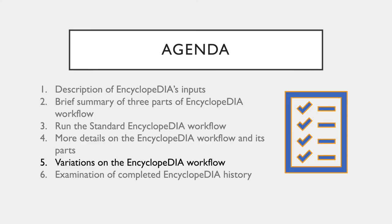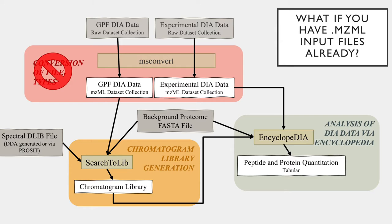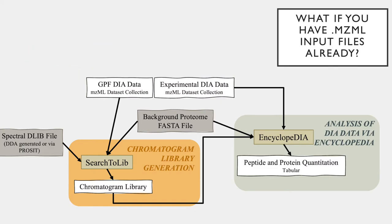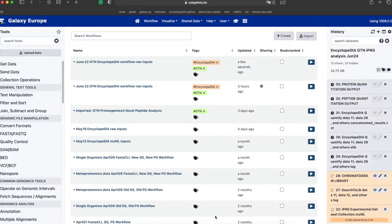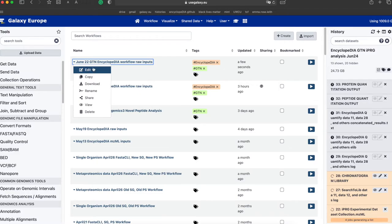Now we will discuss how the Encyclopedia workflow can be tailored to your specific DIA data by altering the parameters of the workflow, as well as variations of the workflow that are available. If you converted your experimental and GPF files to the mzml format outside of Galaxy EU, you can alter the standard workflow to directly use your mzml inputs. Simply, you take out the msconvert step. To edit the workflow to accept mzml inputs, go to the Workflows tab at the top. Go and make a copy of the Encyclopedia workflow using the raw inputs that was taken from the shared data workflows tab.